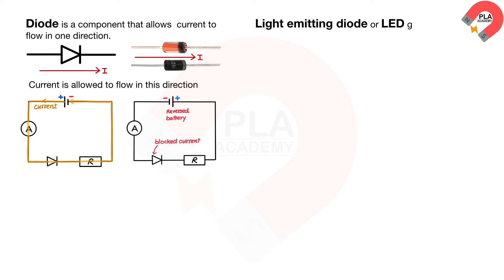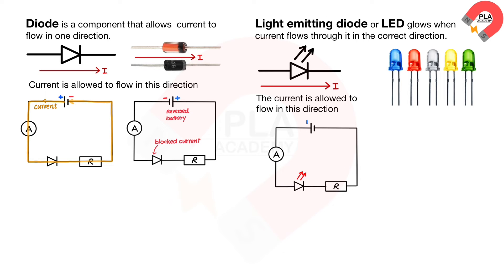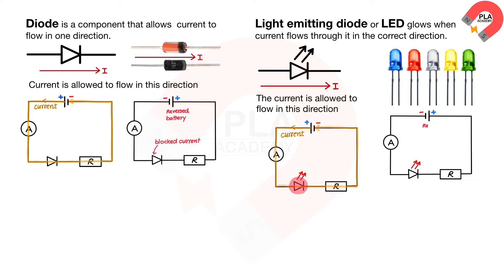A light-emitting diode, or LED, glows when current flows through it in the correct direction. This is the symbol of a light-emitting diode. For the first circuit diagram, the current flows from the positive to negative terminal, and the LED allows current to pass through, causing it to glow brightly. For the second circuit diagram, the battery is reversed, causing the current to be blocked by the LED, so it does not glow.